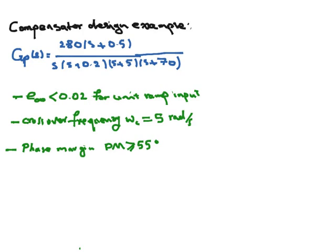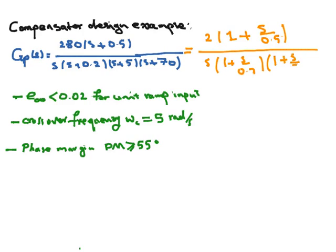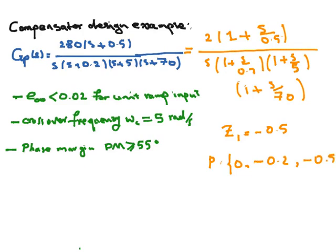We can rewrite the transfer function as: 2 times (1 + S/0.5) divided by S times (1 + S/0.2) times (1 + S/5) times (1 + S/70). From here we see that we have one zero at −0.5 and poles at 0 (origin), −0.2, −0.5, and −70.